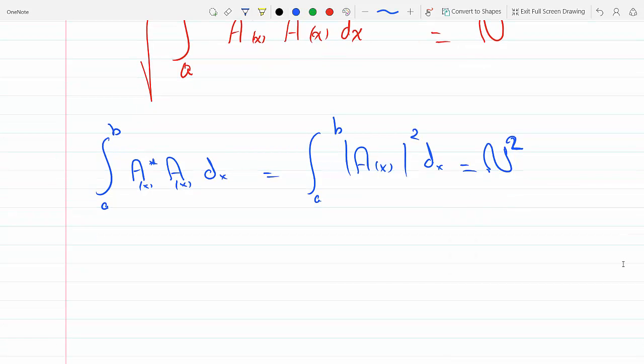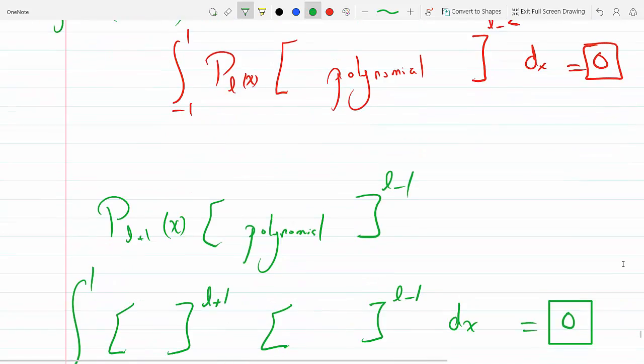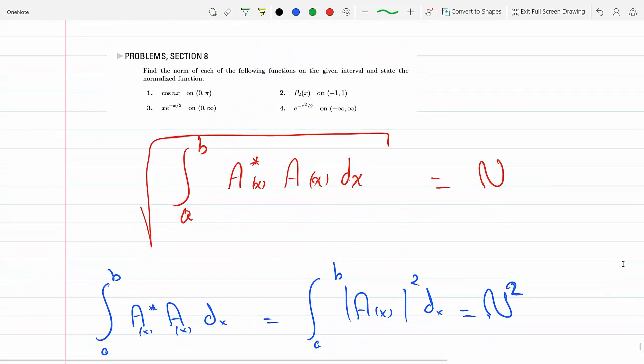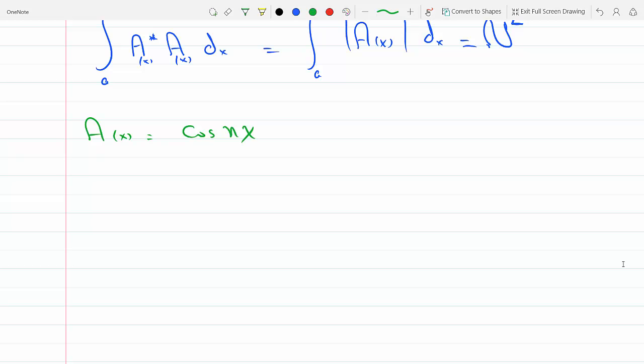Okay, so here for cosine, if your A(x) is cosine(nx)—we're doing number one on zero to pi, cosine(nx)—so if A is cosine(nx) on zero to pi, then the complex conjugate of this is itself.